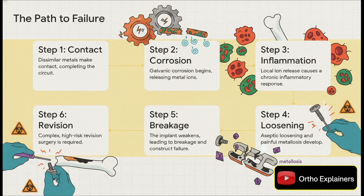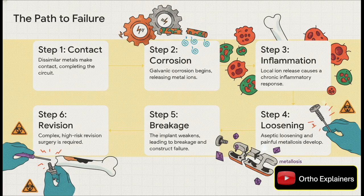Once that corrosion process begins, it sets off a predictable and disastrous clinical cascade. First, the corrosion releases metal ions into the local tissue, triggering a chronic inflammatory response. That response leads to bone resorption right at the implant interface, causing aseptic loosening and painful metallosis. Eventually the implant itself can weaken and break, leading to total failure of the construct and the need for complex, high-risk revision surgery.